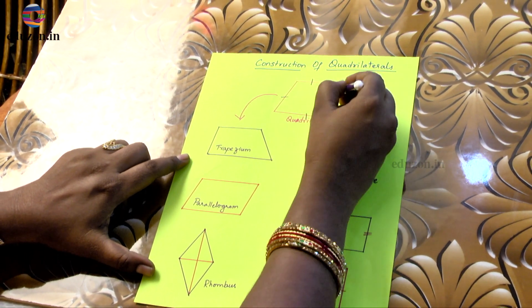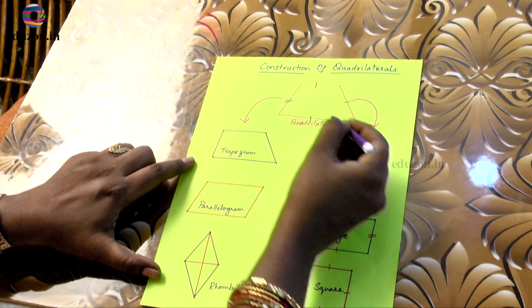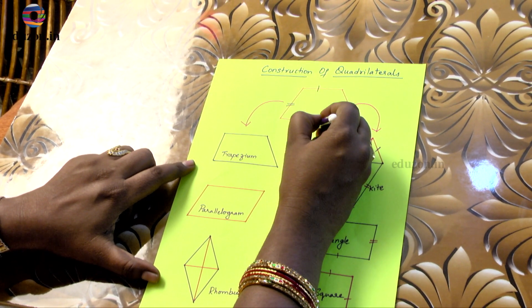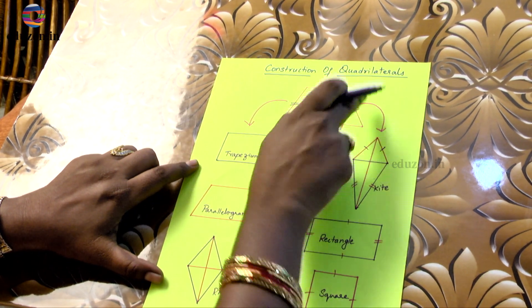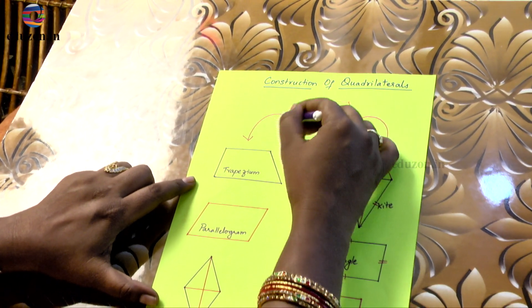So you can see here that there are four sides: side 1, side 2, side 3, and side 4. So these are the four sides of a quadrilateral and it is a closed figure.